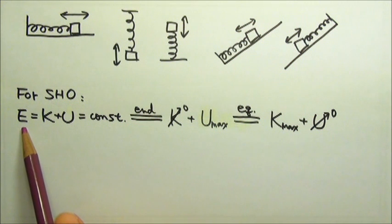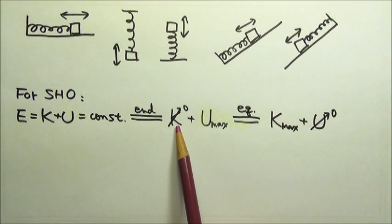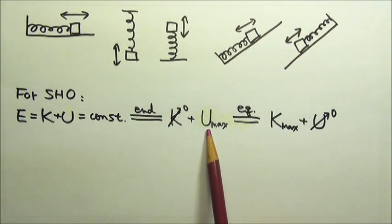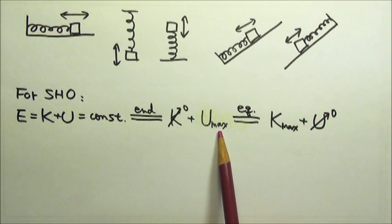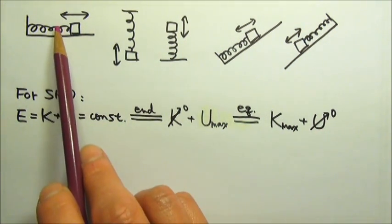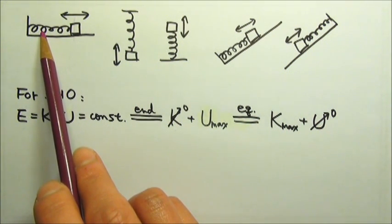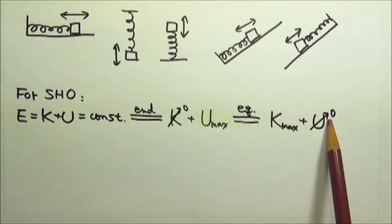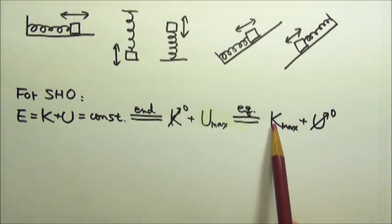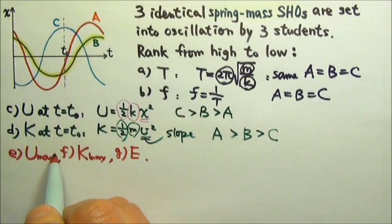For a simple harmonic oscillator, the total mechanical energy K + U is conserved. At the endpoint, because it's a turning point, so the speed is zero, the kinetic energy is zero. That means that all of the energy is in the potential energy. So of course, the potential energy would be a maximum. At the equilibrium position, the kinetic energy is the maximum. Because for a horizontal spring-mass oscillator, at the equilibrium position, the spring is relaxed. There is no energy stored in the spring, so no potential energy. That means we get all the energy in kinetic energy, therefore the kinetic energy is a maximum. That means Uₘₐₓ = Kₘₐₓ = E. So those three are equal.